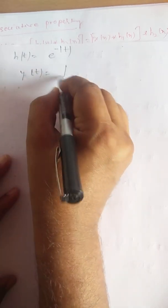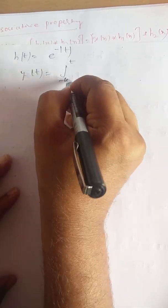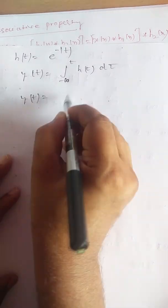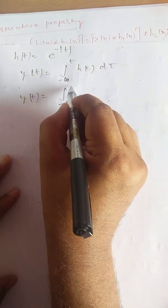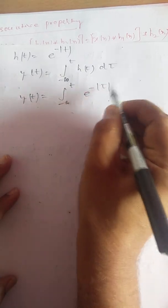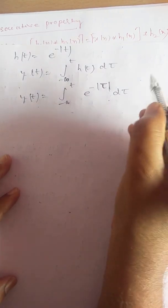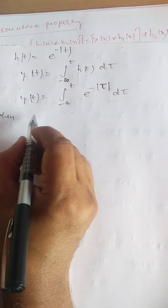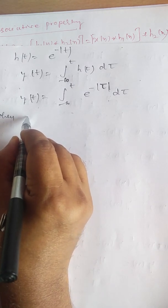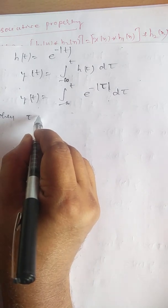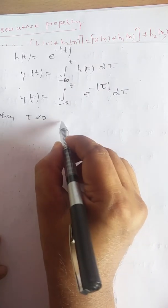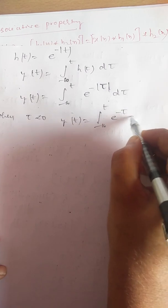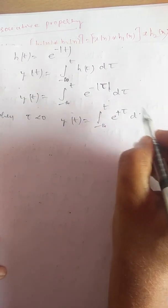So y(t) = integral from minus infinity to t of e^(−|τ|) dτ. We take two cases. When τ < 0, the modulus gives −τ, so y(t) = integral from minus infinity to t of e^(+τ) dτ. Integrating gives e^τ evaluated from minus infinity to t, which equals e^t − e^(−∞) = e^t.